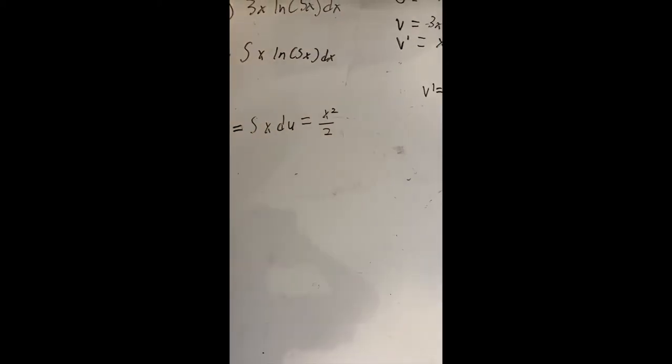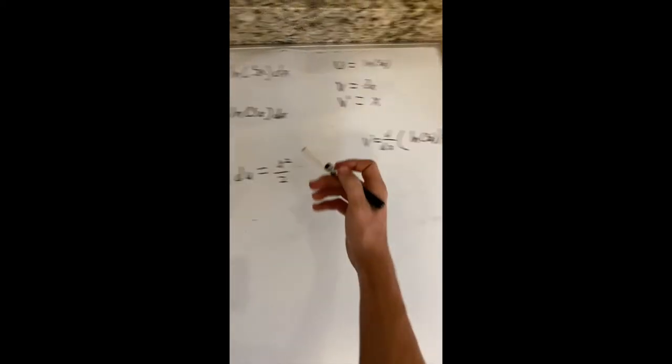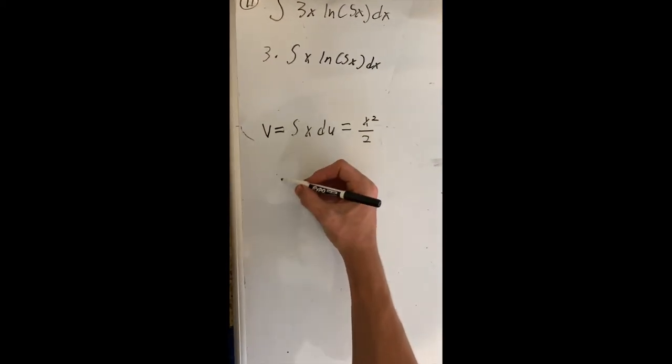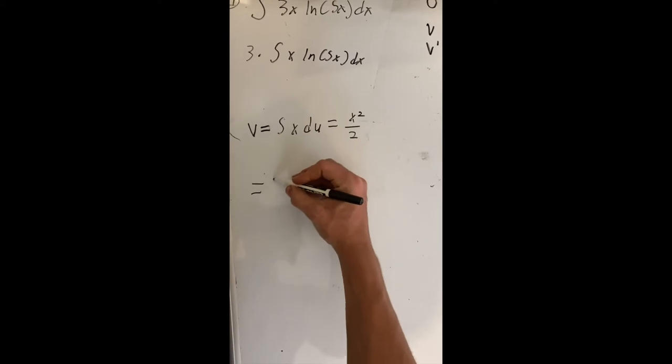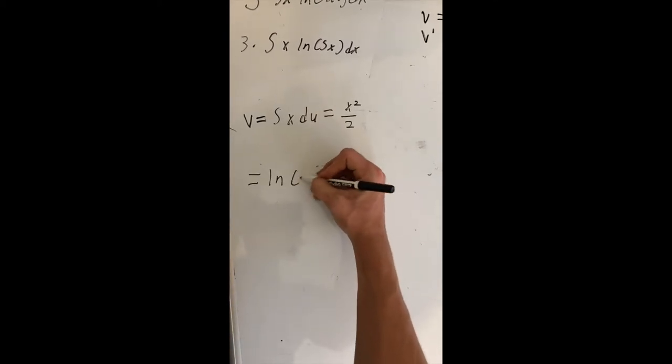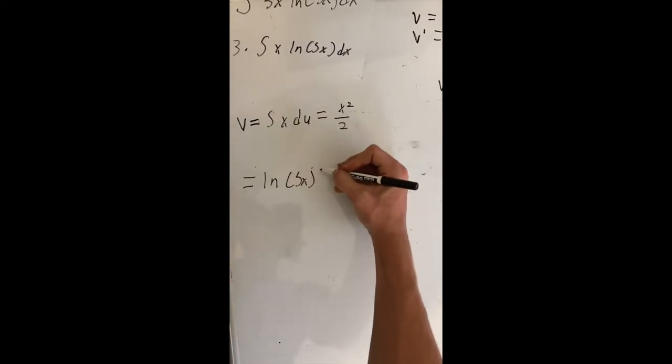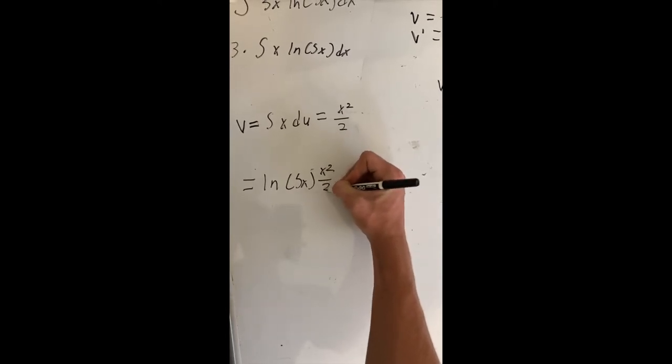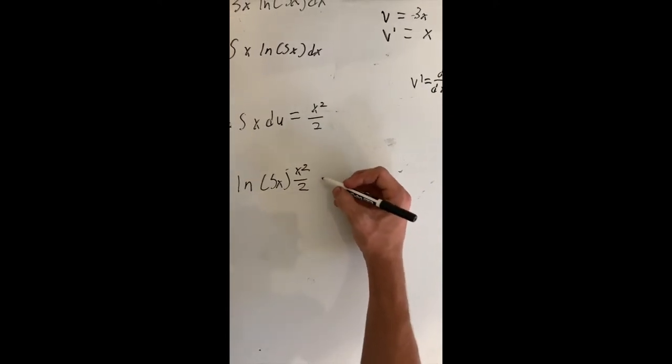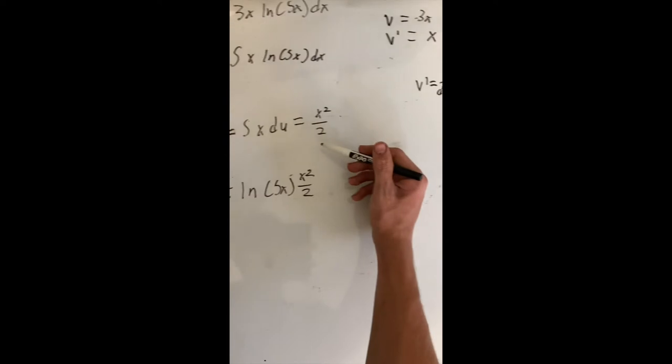And now that we have the parts, or two different parts, we are going to get ln 5x of x squared divided by 2. So that's this,